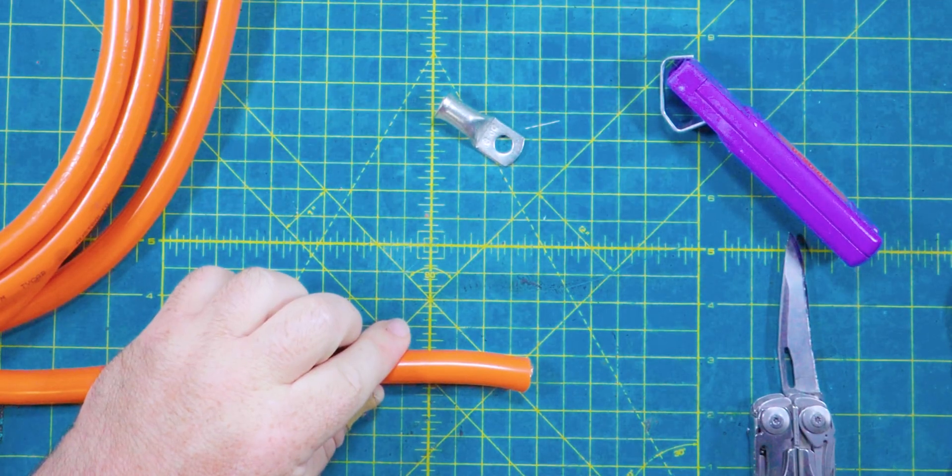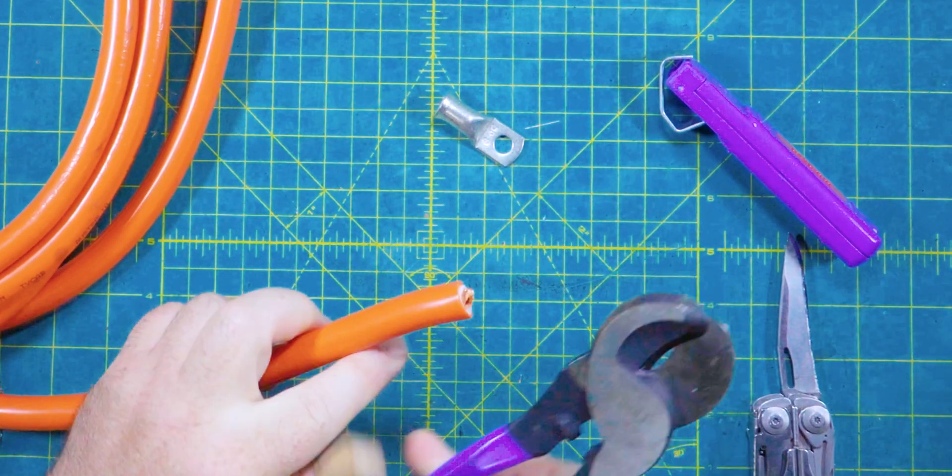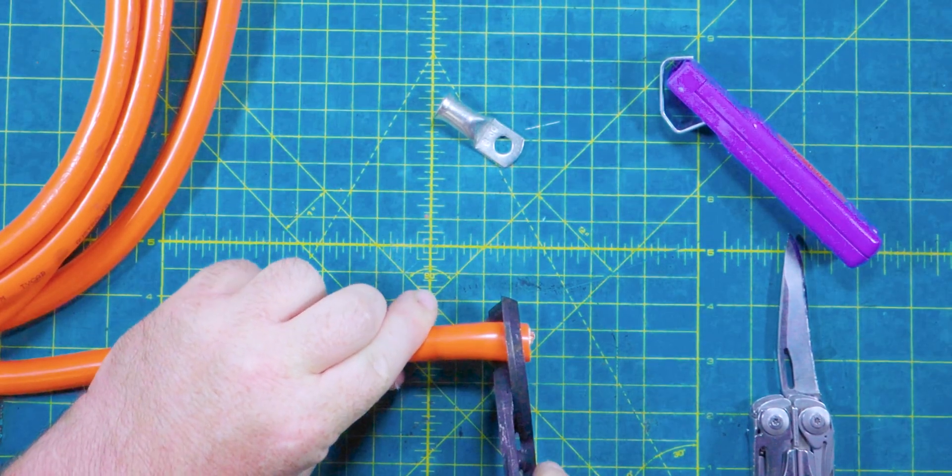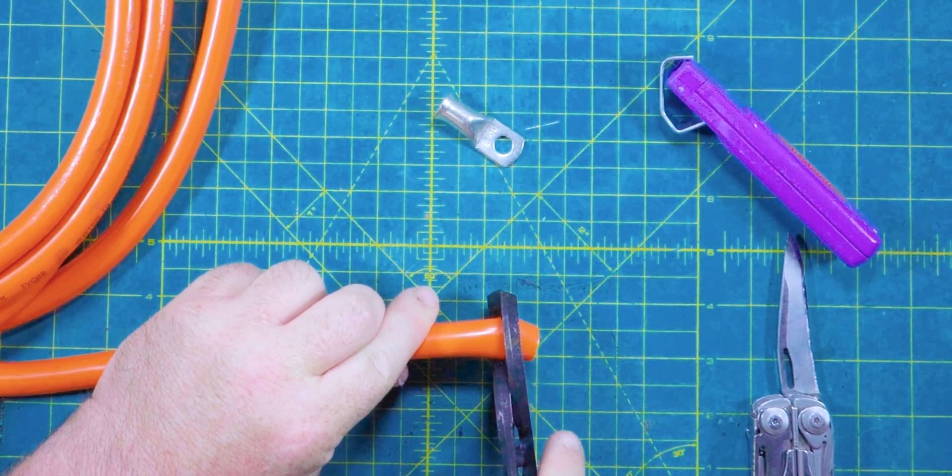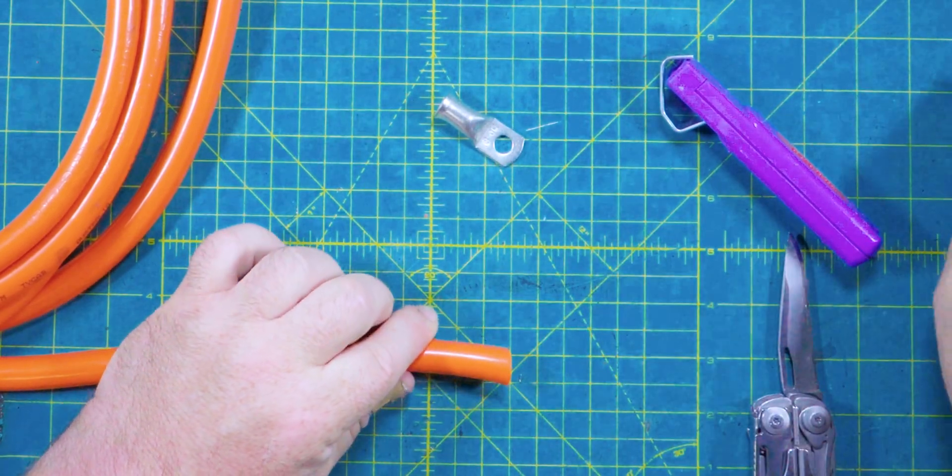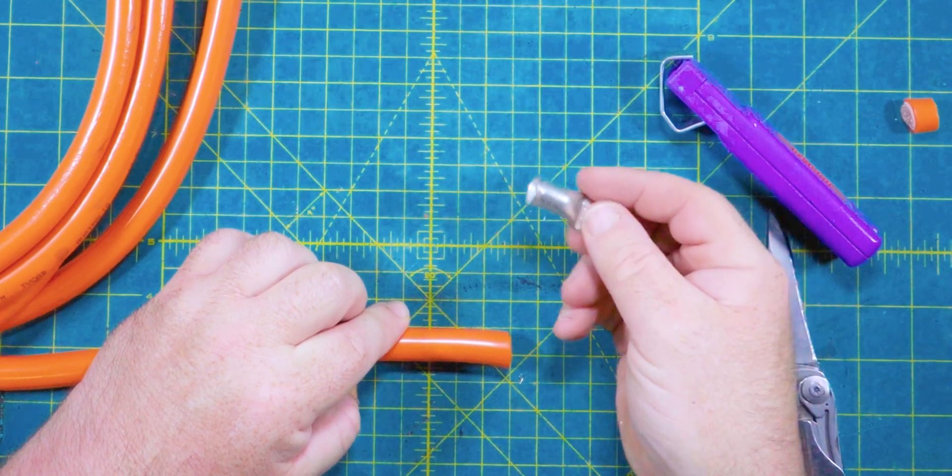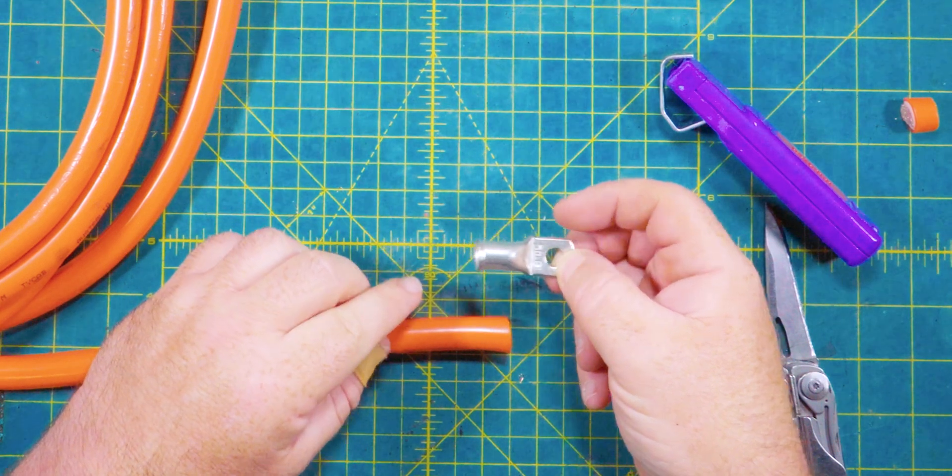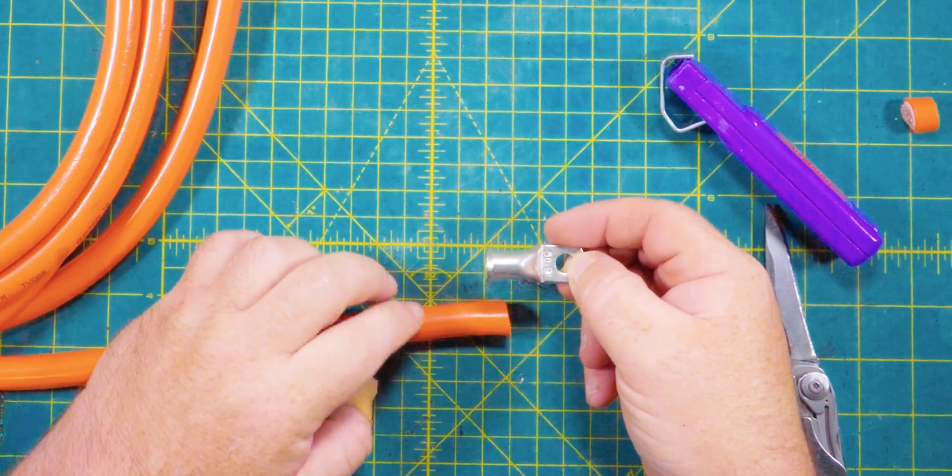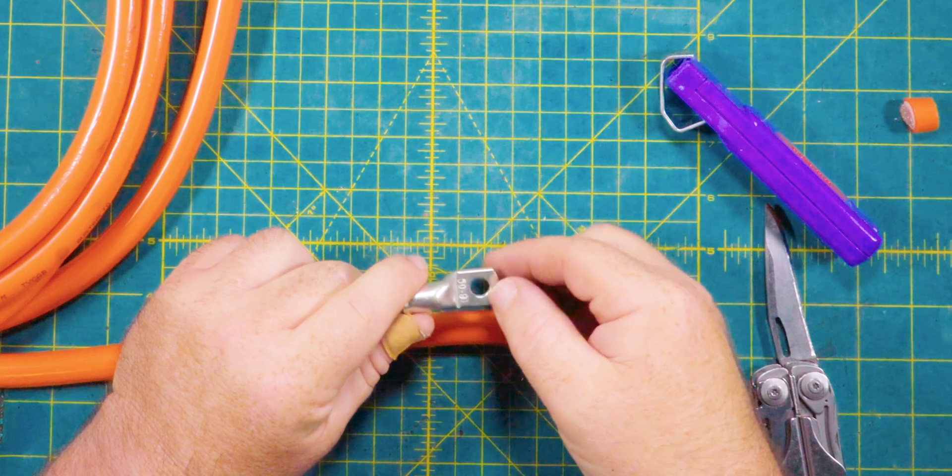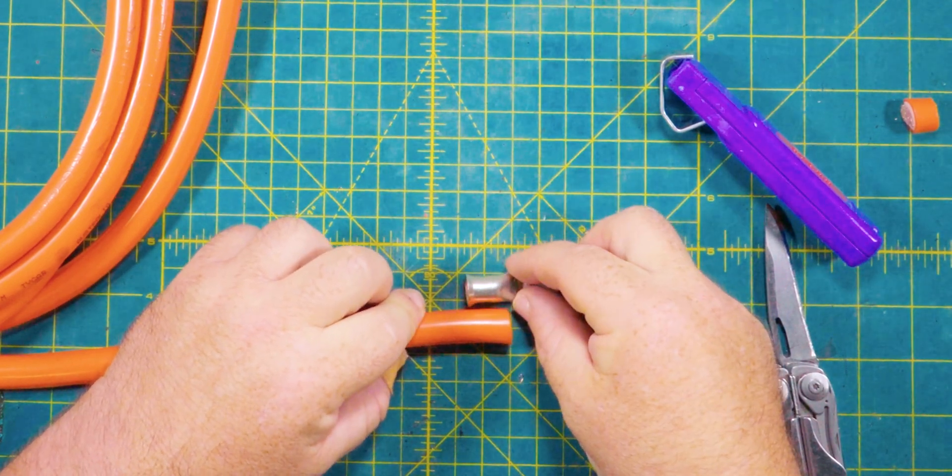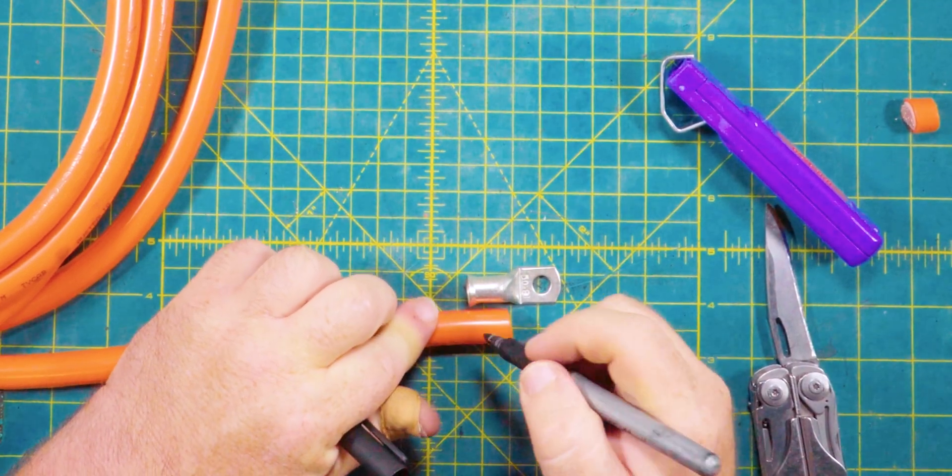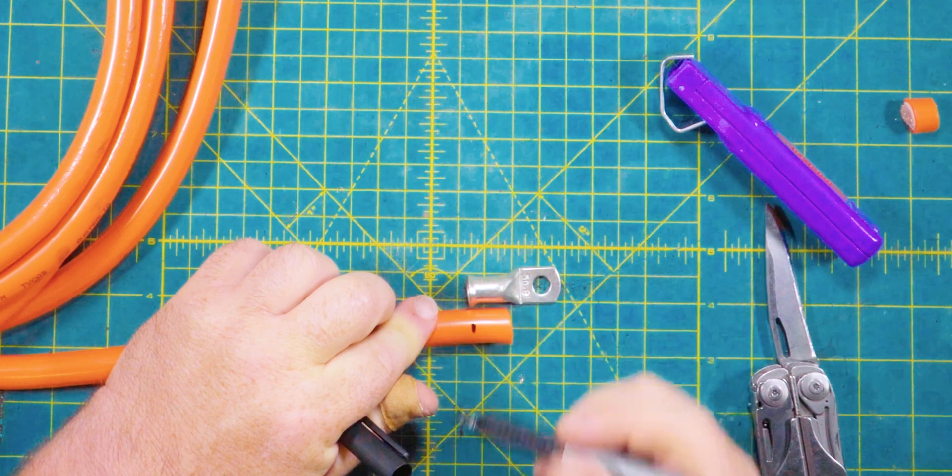First up, with a large cable like this, you probably want to square it up a little bit. We'll put it in the cutters, nice and square, and give it a little trim. Now we've grabbed our lug. This lug will fit onto our clamp - it's a flared type, 50mm to suit the 50mm cable, with an 8mm stud hole to fit those clamps. All you do is line it up to the depth you want it to strip and put a little mark there.